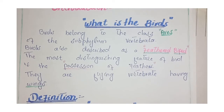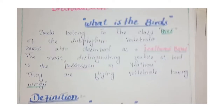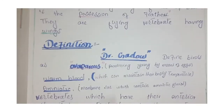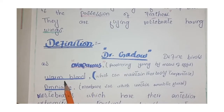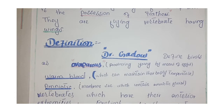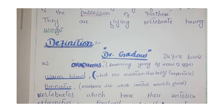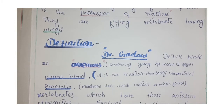Birds are defined as oviparous — their young ones are produced by means of eggs. They are warm-blooded, meaning the body can maintain its own temperature. They are also amniotic vertebrates, surrounded by amniotic fluid.